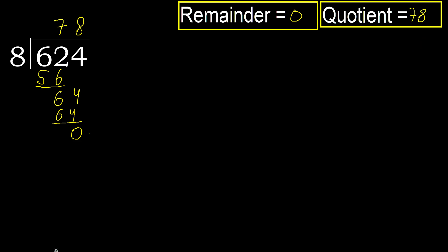624 divided by 8 is 78. The remainder is 0.